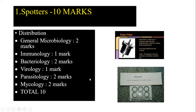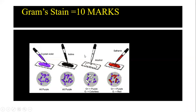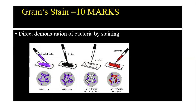The second station is Gram staining, worth 10 marks. You have to perform the Gram stain, observe the result, write the inference, and draw the diagram.